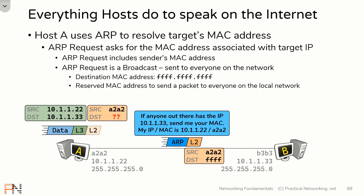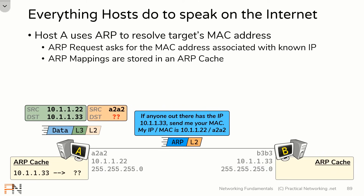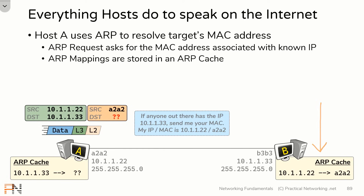ARP mappings are stored in what's called an ARP cache. Every device which has an IP address has an ARP cache. Host A has an IP address and host B has an IP address, so they both have ARP caches. At the moment, host A's ARP cache simply states that we're trying to resolve the 10.1.1.33 IP address to a particular MAC address, while host B's ARP cache is currently empty. When this request makes it across the wire, you'll see something happens to host B's ARP cache. Host B was able to populate an entry in its ARP cache for host A — identifying that the IP address 10.1.1.22 maps to the MAC address A2A2. That occurred because in the original ARP request, host A provided its own MAC address, so by simply receiving an ARP request, host B was able to learn an ARP entry.